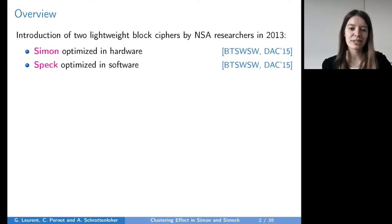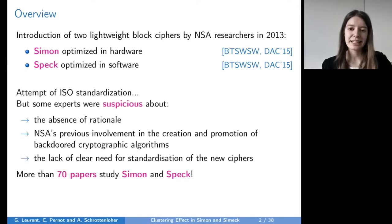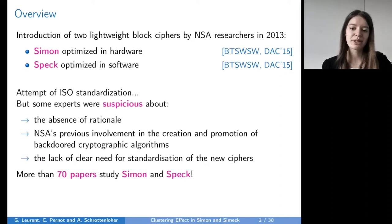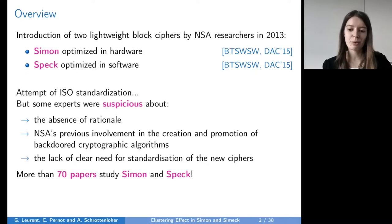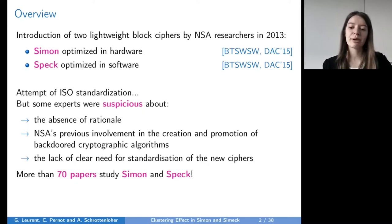Simon and Speck are two lightweight block ciphers introduced by the NSA in 2013. Simon is optimized in hardware while Speck is optimized in software. The NSA tried to get Simon and Speck standardized at ISO but some experts from other countries were suspicious, because Simon and Speck were introduced without any rationale and because of the NSA's previous involvement in the creation and promotion of backdoor cryptographic algorithms such as Dual EC.